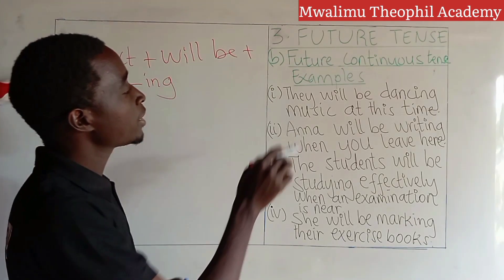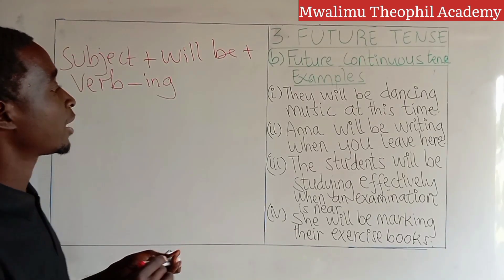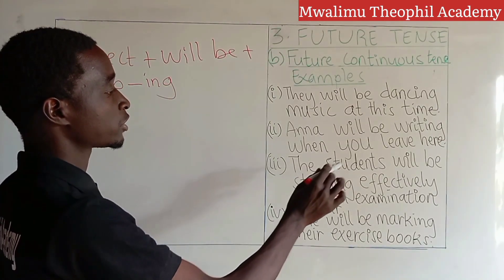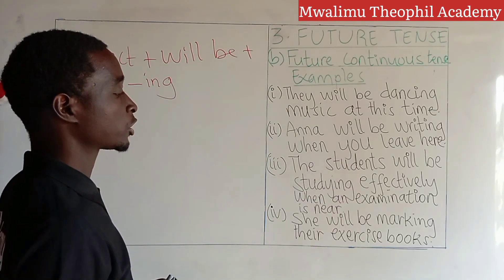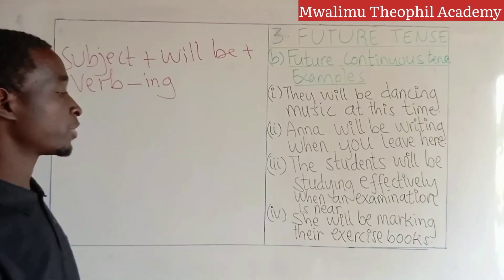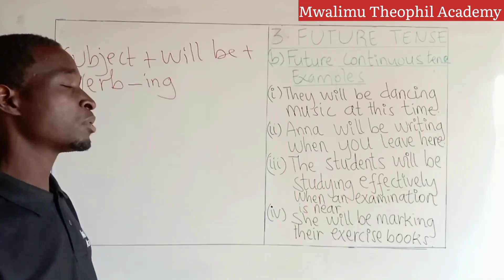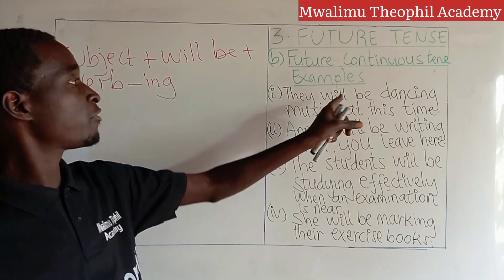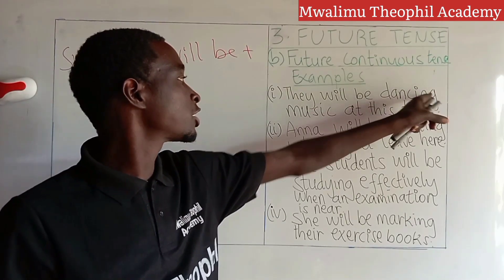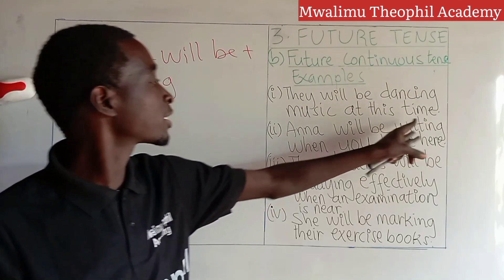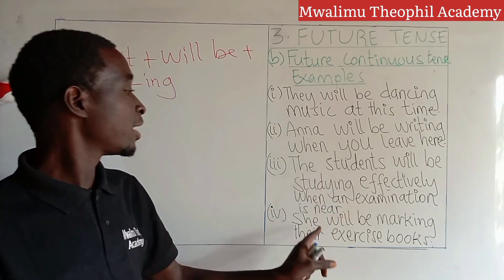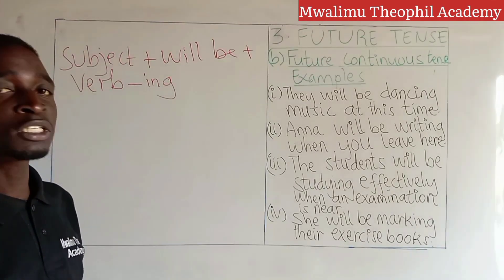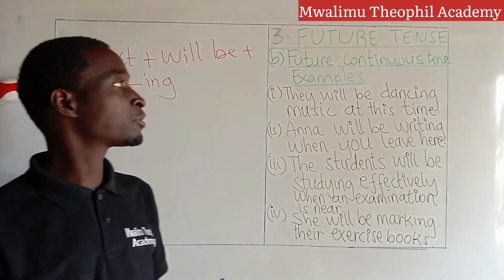Our first sentence: they will be dancing music at this time. Our second one: Anna will be writing when you arrive here. Our third example: the students will be studying effectively when an examination is near. Our fourth example: she will be marking the exercise books. In all four examples, after the subject, we have 'will be' followed by a verb ending with '-ing': dancing, writing, studying, marking. This is the general way of constructing sentences in future continuous tense.